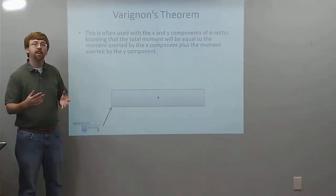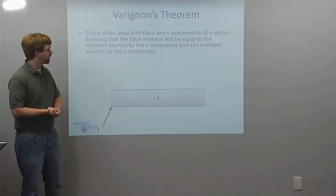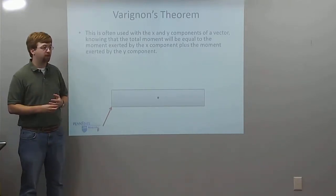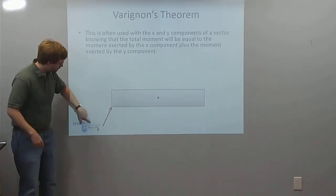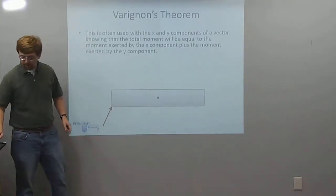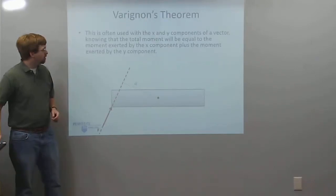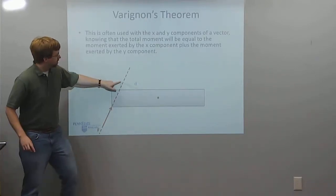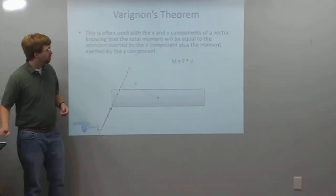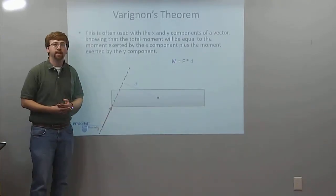The second and more common way we use Varignon's Theorem is to start with a single force and break it down. We've got some force here, and we're taking the moment about this point. Normally we would need to find this distance D from the line of action to the point we're taking the moment about. The moment is going to be F times D.